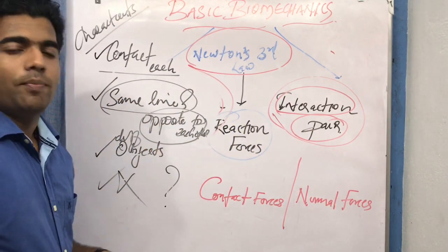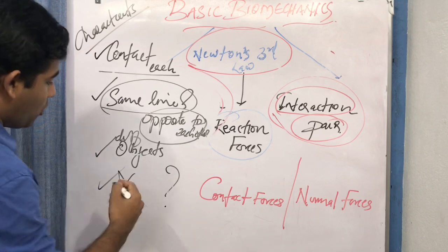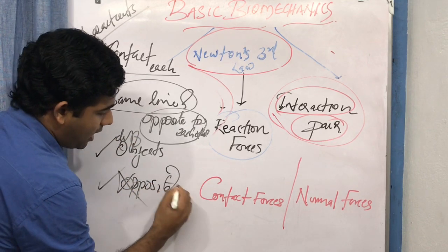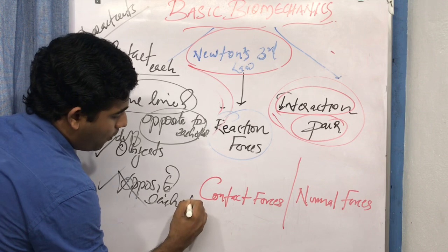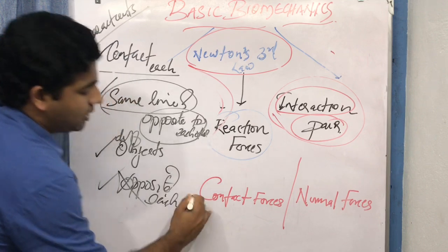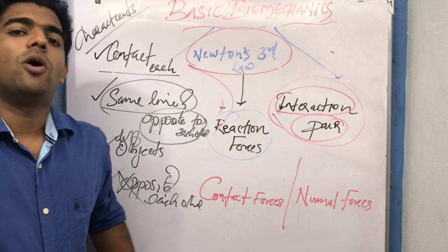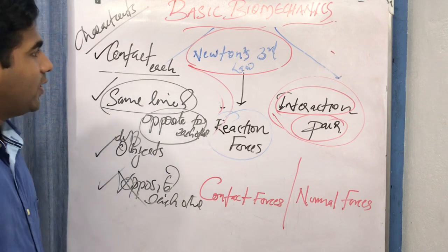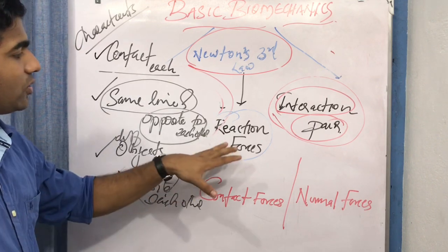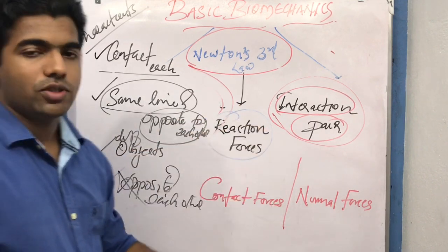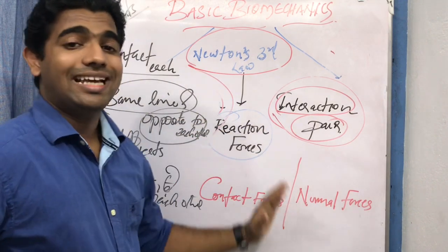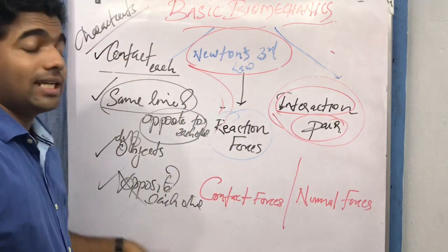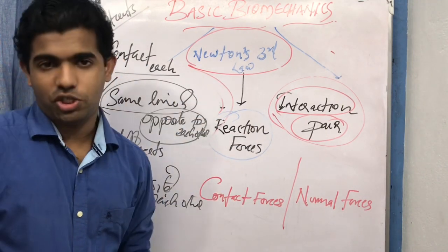In summary, if asked about action-reaction forces, you can state that they are based on Newton's third law, then define their characteristics: objects must contact each other, forces are in the same line and opposite, they act on different objects, and they cannot be resolved as part of a force system. That is sufficient.